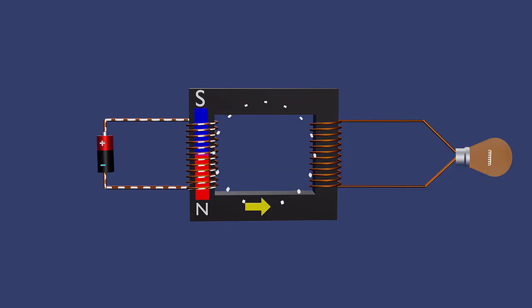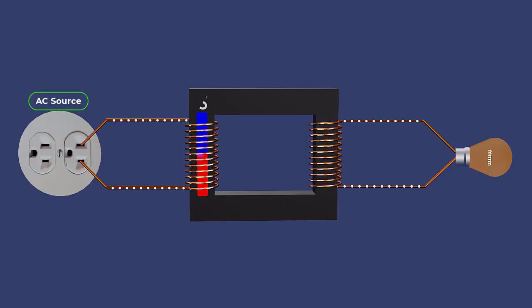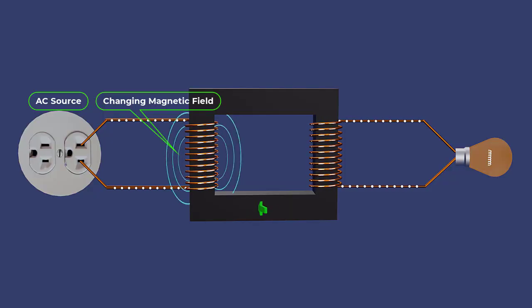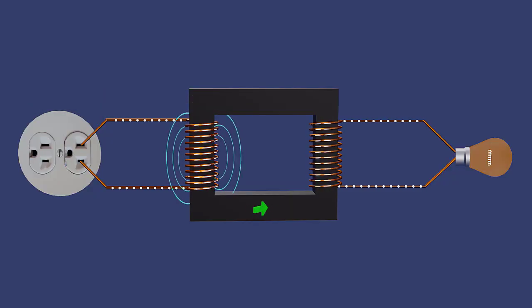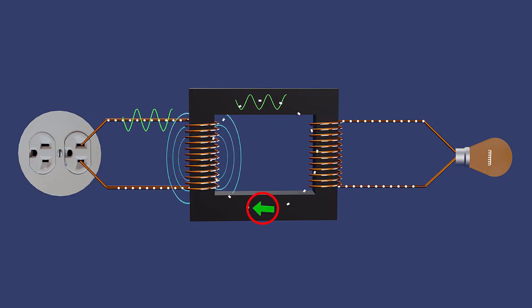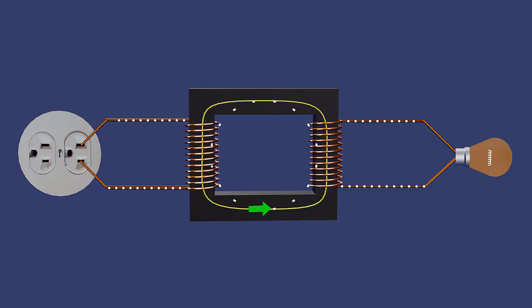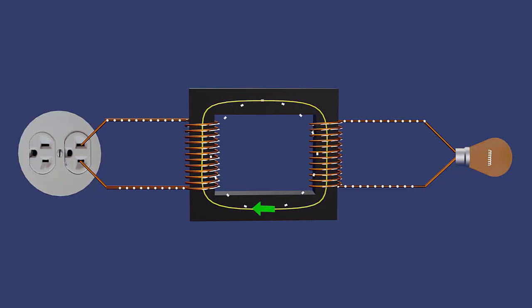However, when the primary winding is connected to an AC source, the varying current creates a varying magnetic flux in the transformer core. The magnetic field has the same frequency as the input current and continuously changes direction and magnitude, expanding and collapsing around the iron core.